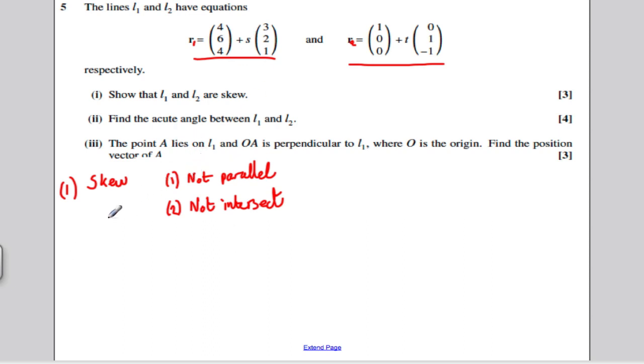You will remember that there are two conditions for lines to be skew. They are skew if two things are true. The first thing is that they are not parallel, they cannot be parallel. And the second thing is that they cannot intersect, they do not intersect.